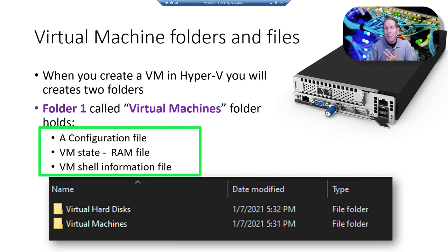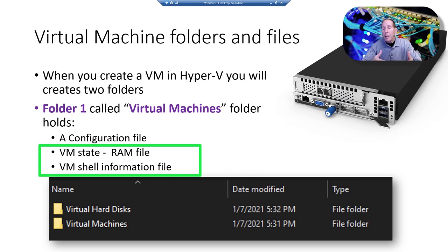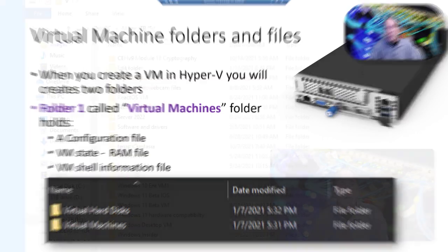One is a VM state — basically when the VM is running, it gives you a picture of your RAM. Then we have one called VM shell. In the past, the VM shell file was actually a part of the VM state file, but Microsoft extracted that and created a separate file. Let's get started.